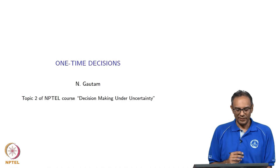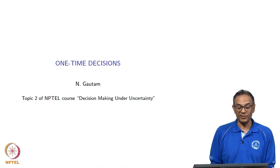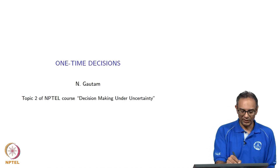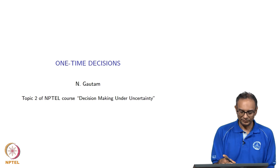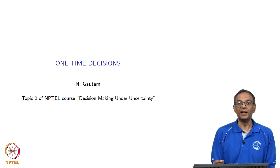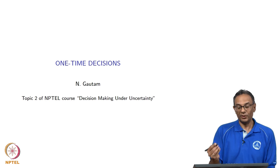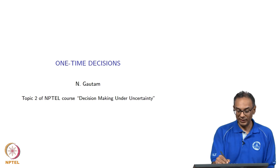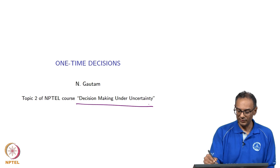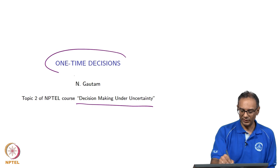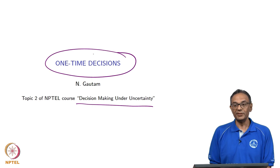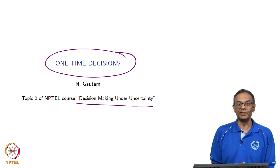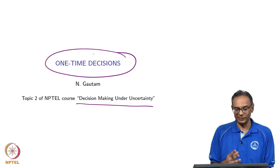We are ready to start the first major topic. This is called Topic 2 for this course and it's called Decision. The course is called Decision Making Under Uncertainty and the first topic is called One Time Decision. So here is where we start making decisions.